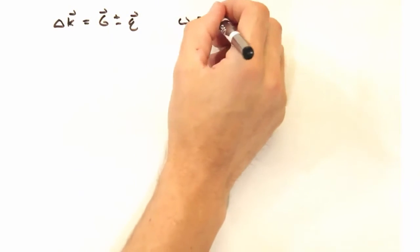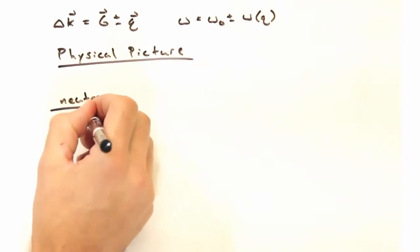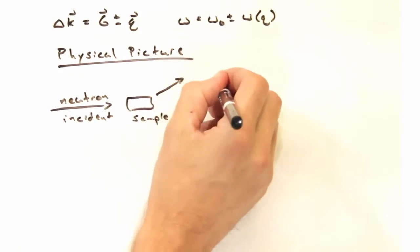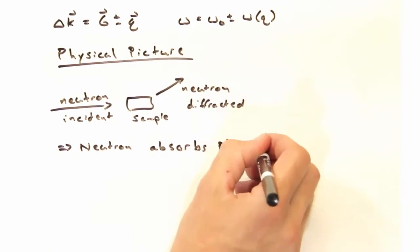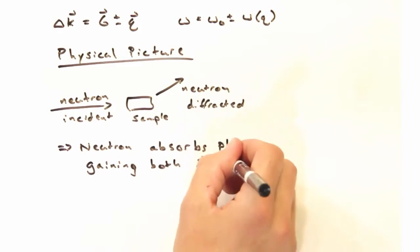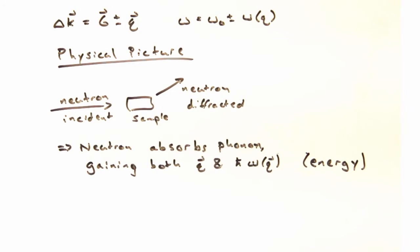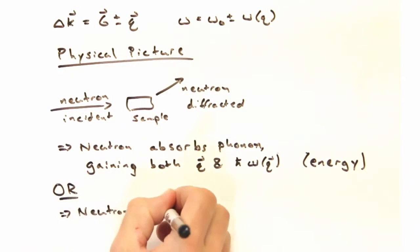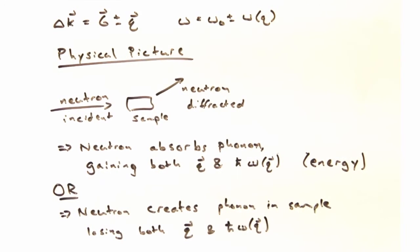So with these two expressions, for delta k and the final omega, let's take a look at the physical picture of what this really means. Say, for example, I've got a neutron incident on my sample, and then it's diffracted off at some angle constructively. In this inelastic case, the neutron potentially absorbs the phonon, gaining both the momentum and the energy of that phonon. Or the neutron is going to create a phonon in the process, and it's going to lose both the momentum and the energy that was required to create the phonon.